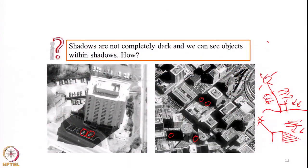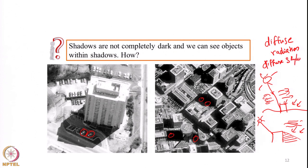The sun's direct radiation is called direct sunlight, and the energy the earth's surface receives from scattered radiation is called diffuse radiation or diffuse skylight. Because of diffuse radiation, we are able to see objects within shadows.